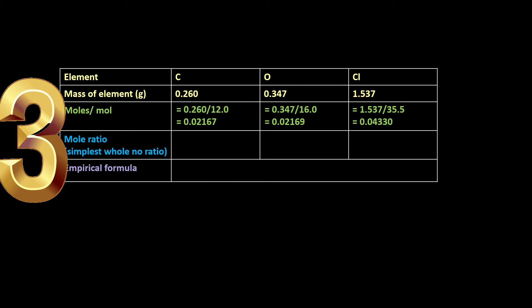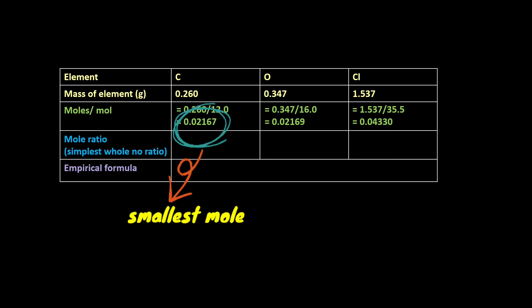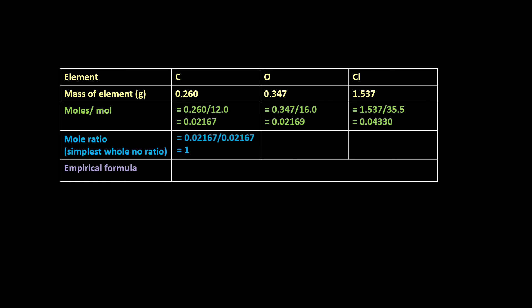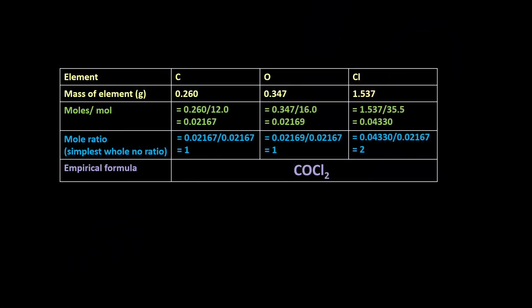Step 3 is to calculate the mole ratio by dividing all moles by the smallest number of moles, which is 0.02167. For carbon: 0.02167 divided by 0.02167 equals 1. For oxygen: 0.02169 divided by 0.02167 also equals 1. For chlorine: 0.04330 divided by 0.02167 equals 2. Hence the empirical formula of the substance is COCl2.